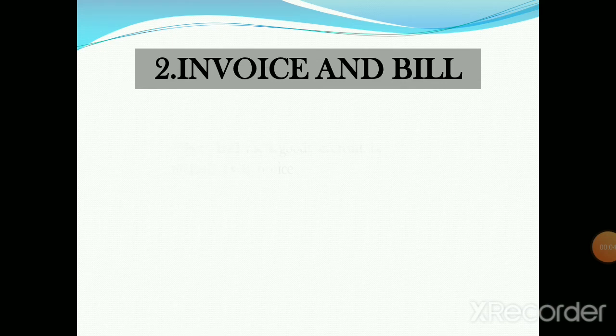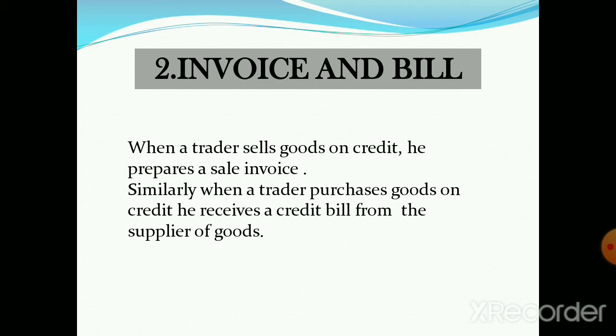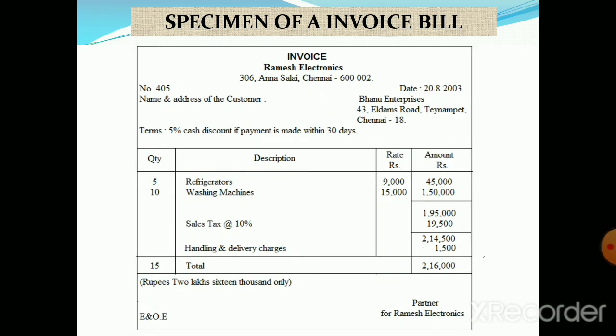Next is invoice and bill. When a trader sells goods on credit, he prepares a sale invoice. The original copy of the sale invoice is sent to the purchaser, and its duplicate copy is kept with the seller to record in its books of account. Similarly, when a trader purchases goods on credit, he receives a credit bill from the supplier. Here is the specimen of an invoice bill, which contains the name and address of the company, invoice number, date, name and address of the customer, and the quantity, description, rate, and total amount of the item.